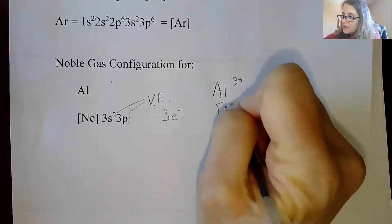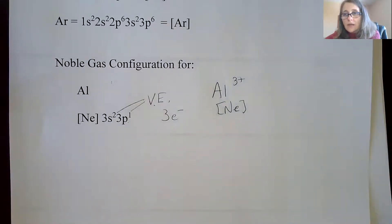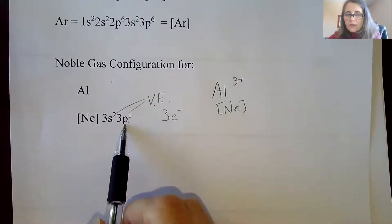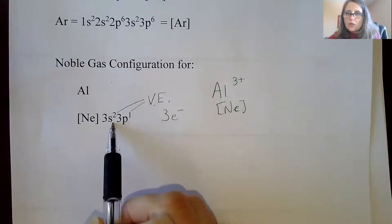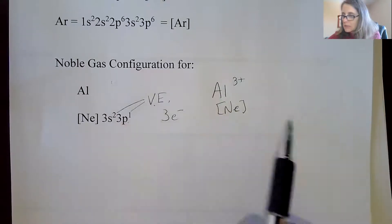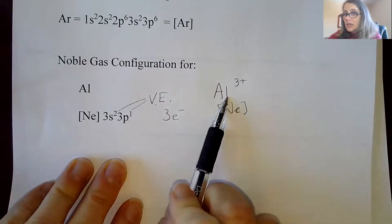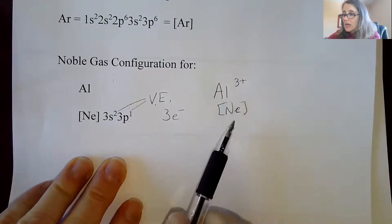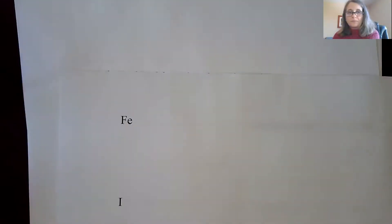So when you write the configuration of some of these ions, you're going to see that it's the configuration of the noble gases. That is why they do what they do. That is why aluminum loses three. It's much easier for it to what we call complete its octet, complete eight electrons. Instead of gaining five electrons, it's much easier for it to lose three electrons. So it becomes neon as an electron configuration. It's still aluminum and it still has 13 protons, but the electrons are in the same configuration as neon.